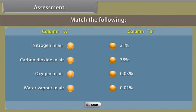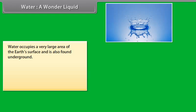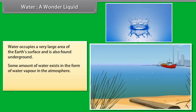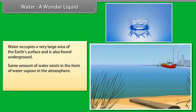Water: a wonderful liquid. Water occupies a very large area of the earth's surface and is also found underground. Some amount of water exists in the form of water vapor in the atmosphere. 97% of the water on earth's surface is found in seas and oceans and is saline. 1% of fresh water is found on the earth. 2% of fresh water is found frozen in the ice caps at the two poles and on snow-covered mountains. The underground water and the water in rivers, lakes and ponds is also fresh. The availability of fresh water varies from place to place. During summer season, most places have to face a shortage of water.